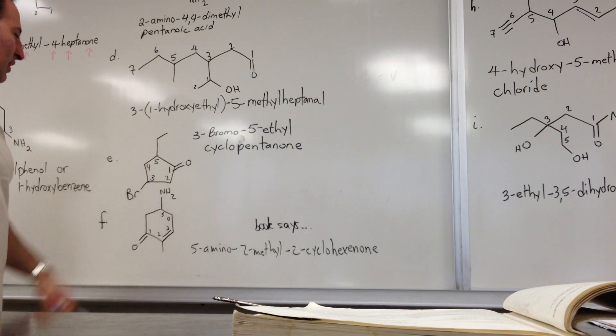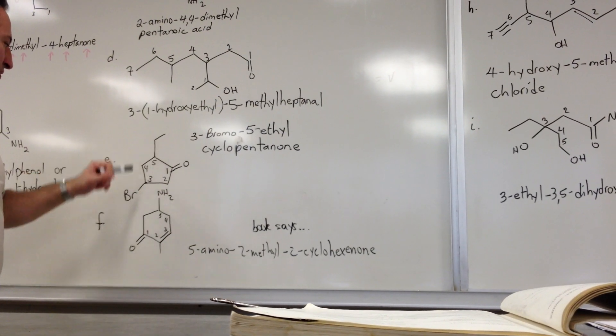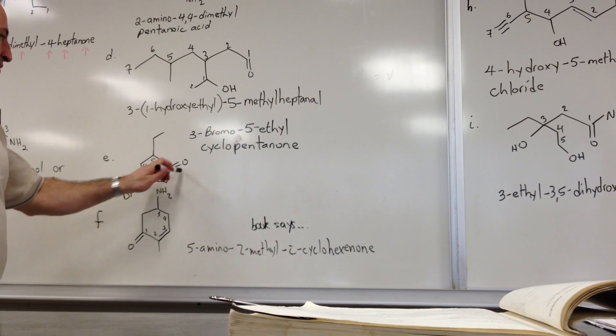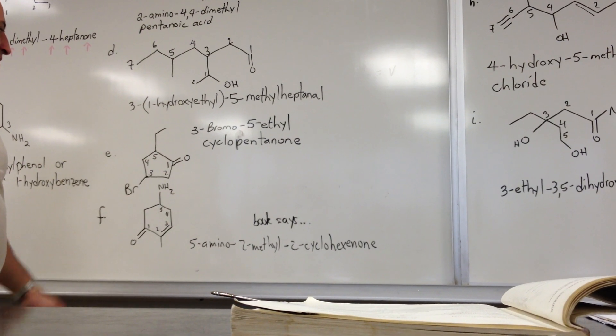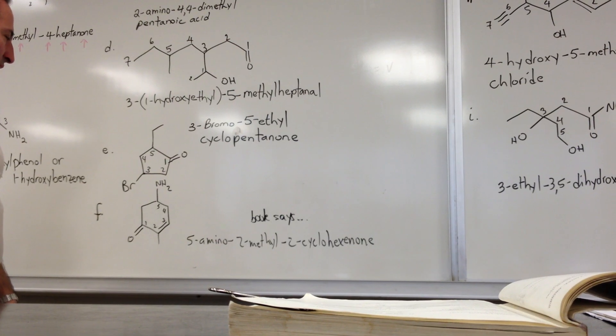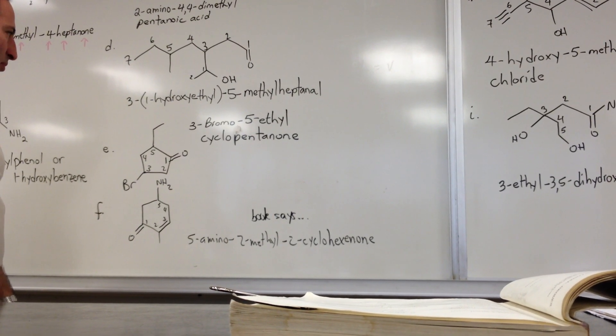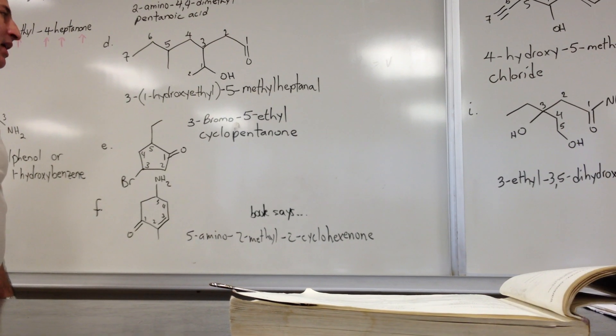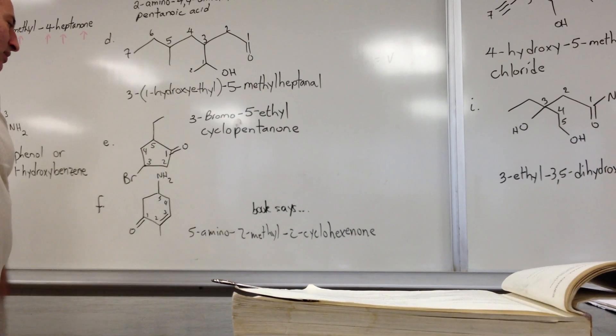This is a cyclopentane that's been substituted with a ketone, an ethyl group, and a bromine. The most important group is the ketone. So we numbered this way, halides are more important than alkyl groups. So it's 3-bromo-5-ethyl-cyclopentanone to show that it's a ketone.